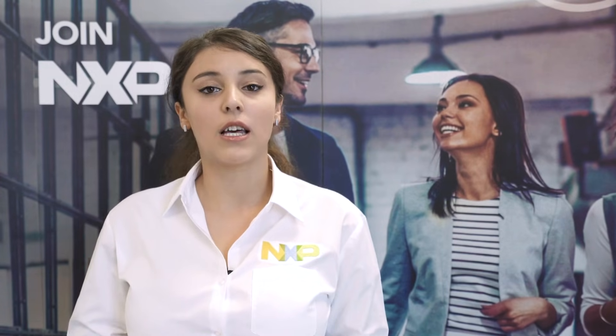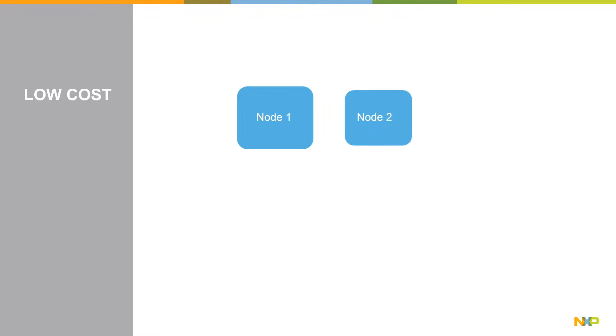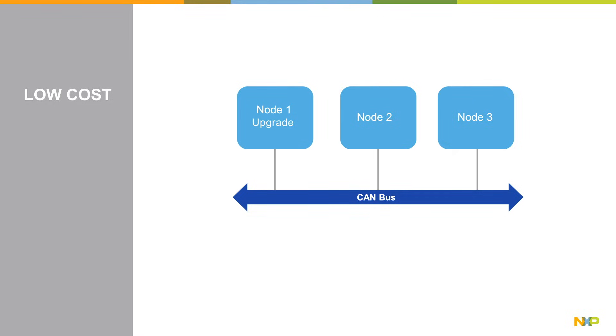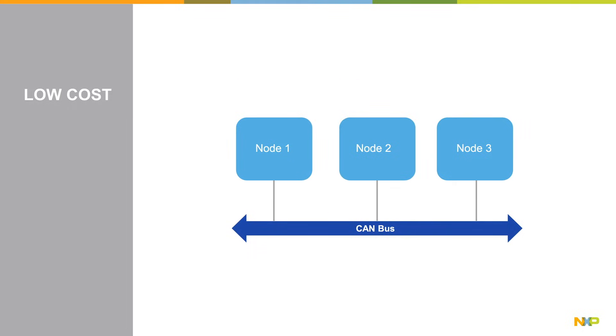Let's take a high-level look at the main benefits of CAN and why they make CAN the most widely used in-vehicle communication network today. First, CAN is low cost. Because each ECU in a vehicle is able to communicate with the rest of the network via a single CAN interface, the cost and architectural complexity are significantly decreased. The CAN bus also makes for easier design upgrades, conserving precious engineering time.